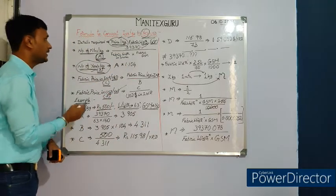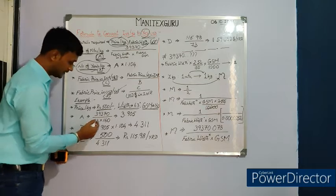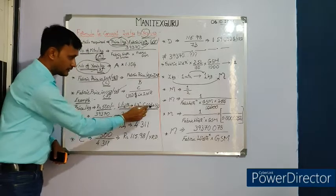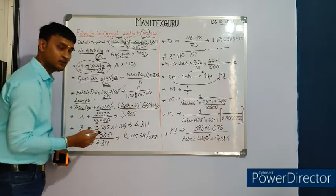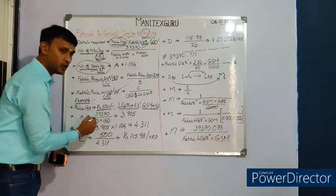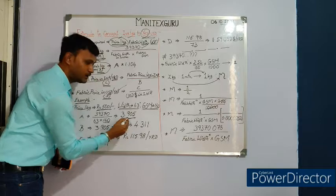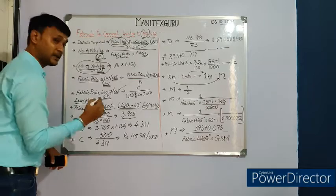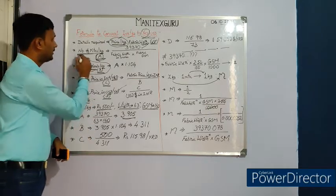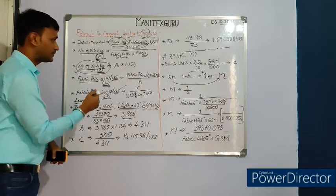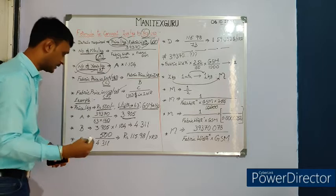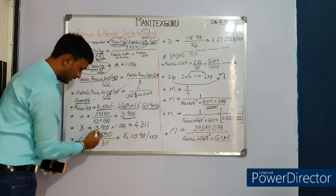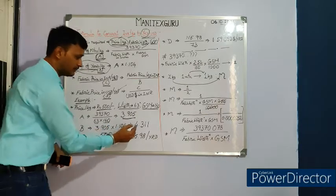Step A: number of meters per kg equals 39,370 divided by fabric width in inches multiplied by fabric GSM. Applying these values, we get 3.905 meters per kg. Step B: convert meters per kg to yards per kg. B equals 3.905 multiplied by 1.094, giving us 4.311 yards per kg.